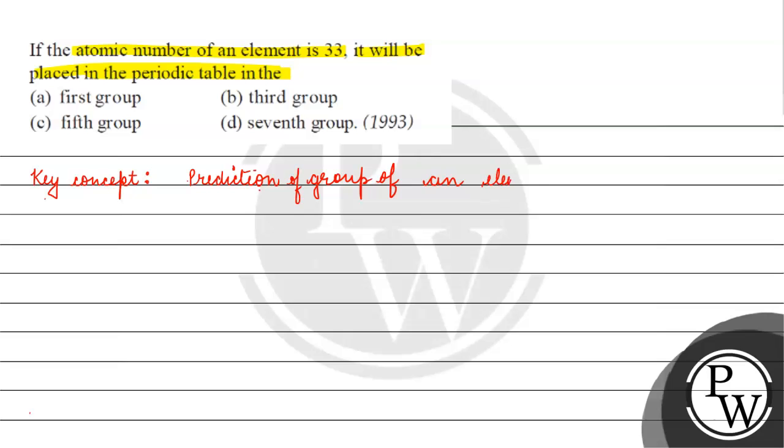Here atomic number is 33. If we do the filling, what we get is Argon 3d10 4s2 4p3. 18 for Argon, then 28, 28 plus 2 is 30, and then 33.